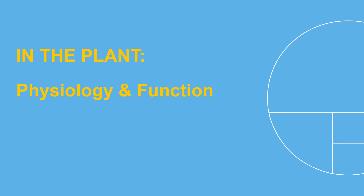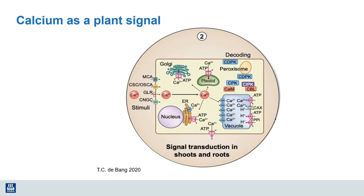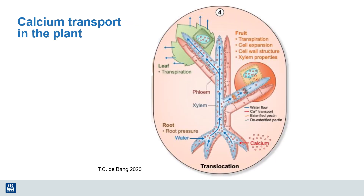Let's spend some time with a brief review of the role of calcium in the plant. There's a nice review paper published by Bang et al. that goes into many physiological aspects of calcium in great detail — for example, the role of calcium as a structural element, how it helps bind cell walls and membranes together. Calcium also has an important role as a plant signal, used as a messenger to signal responses to various stresses and transport functions within the plant.